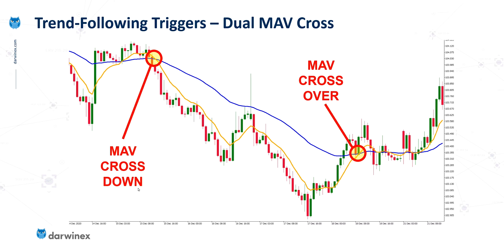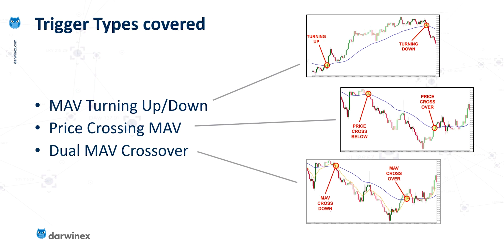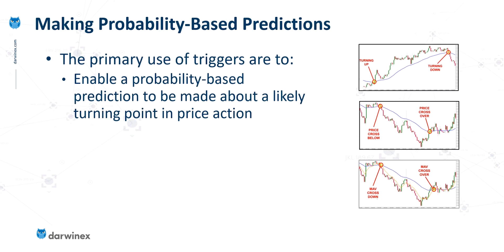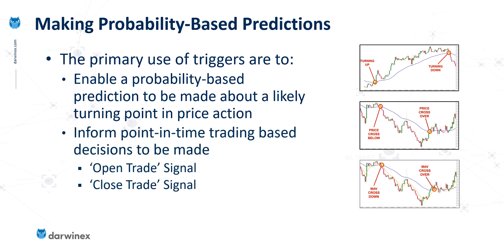Does this work better or worse than the previous trigger? Well, that will depend on which other indicators you're using in conjunction with this. The way you'll determine that for your specific system is by backtesting, in order to identify which of these gives you the better edge. There will of course be other potential trigger points that moving averages provide, but these tend to be the most common. With thorough backtesting, we can start to make probability-based predictions about what will happen to the price action next, and based on those probabilities you can inform your rules of when to open and close trades.